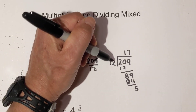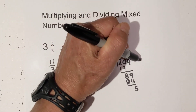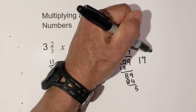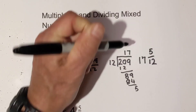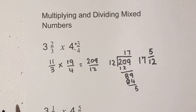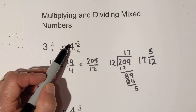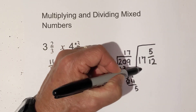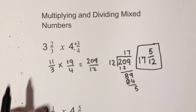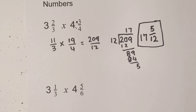So that gives us seventeen and five twelfths. Five is a prime number, so that is fully reduced. So three and two-thirds times four and three-fourths equals seventeen and five twelfths. Now let's work on another one.